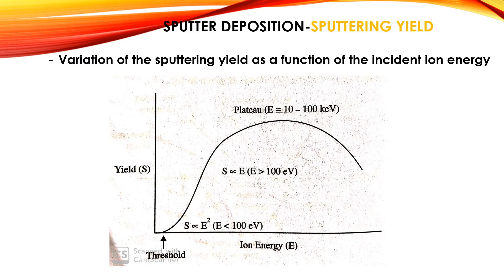This figure represents the variation of sputtering yield as a function of incident ion energy. The yield increases quadratically with energy first, then proportionally, after which it reaches saturation. When the energy is high enough, the yield starts to decrease, as shown in the figure.